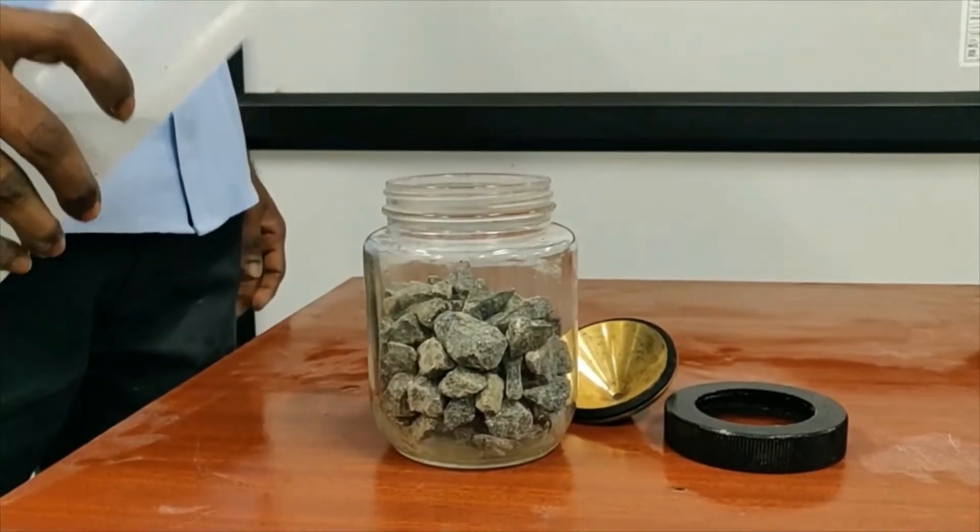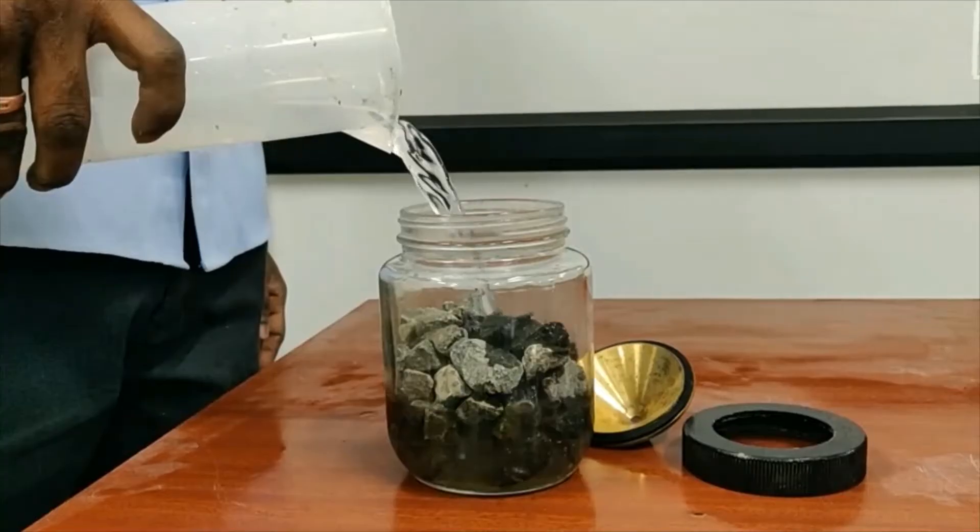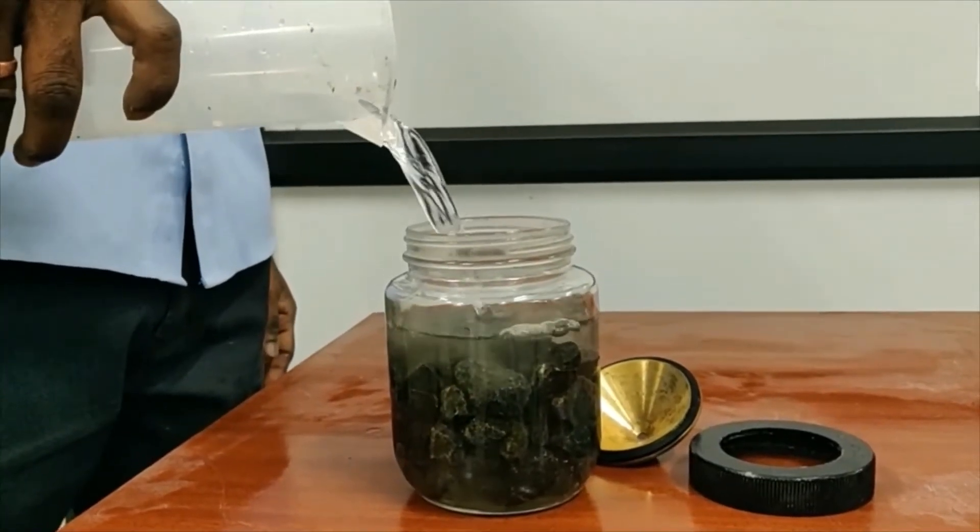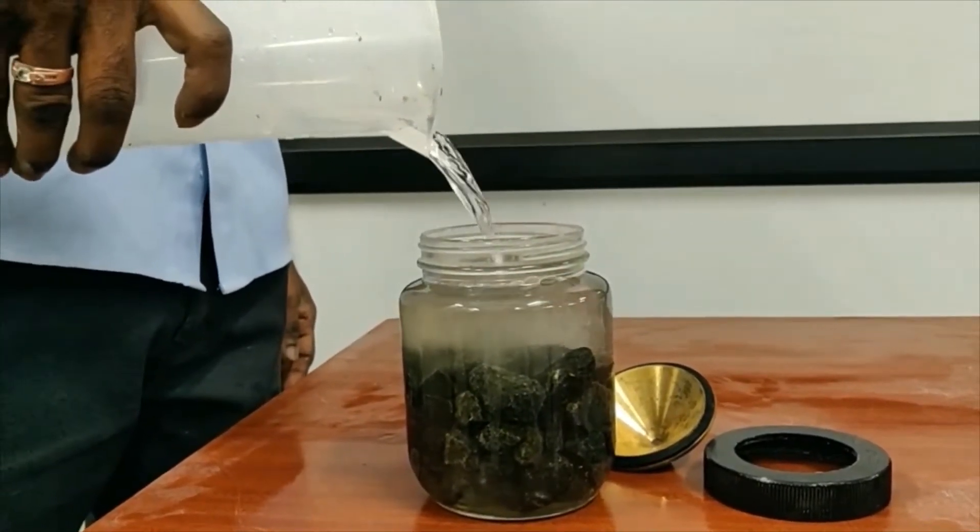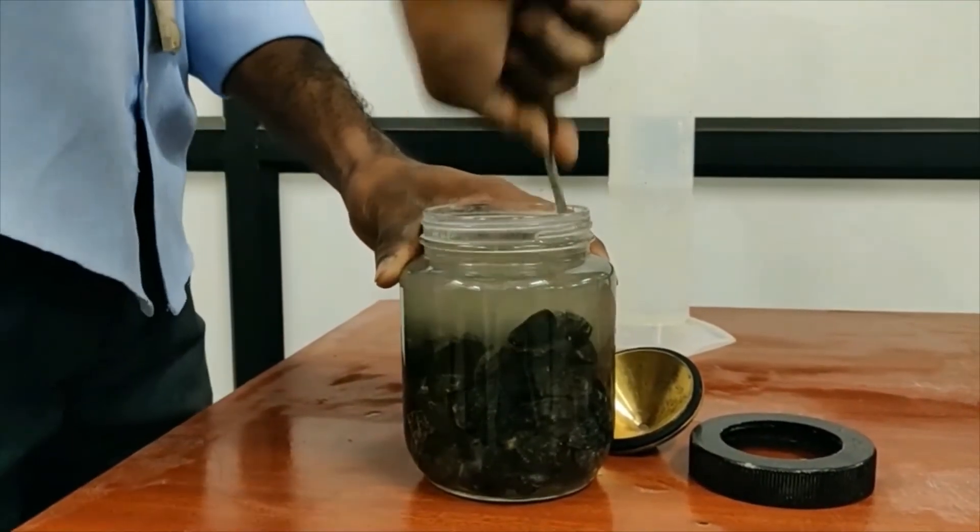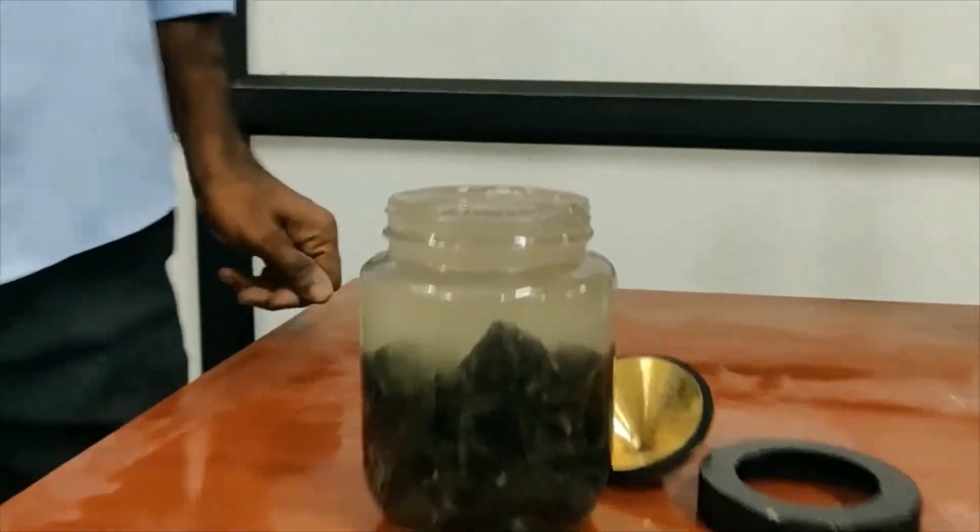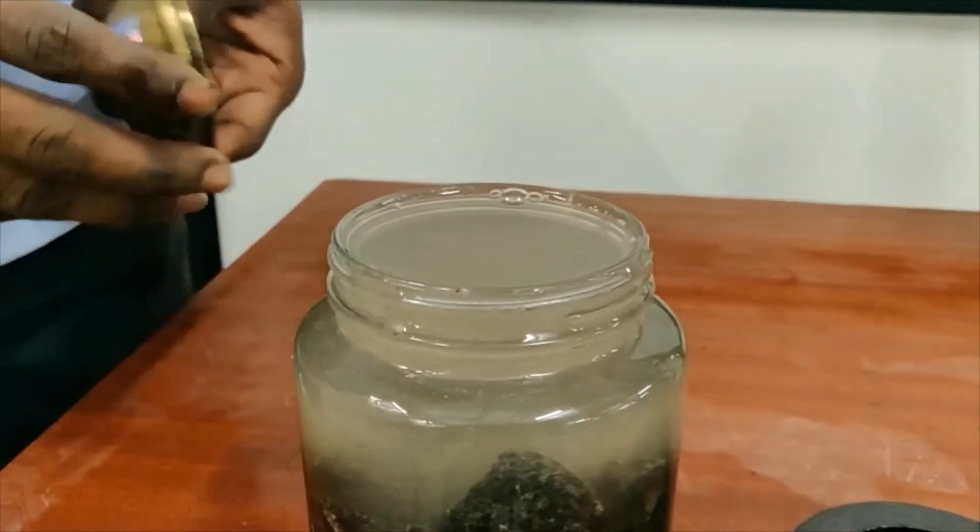Now we should fill water in the jar up to the top of the lid, the same as we did for fine aggregates. We can use the spatula for releasing the air voids present inside. Now the water has been filled to the top of the jar.